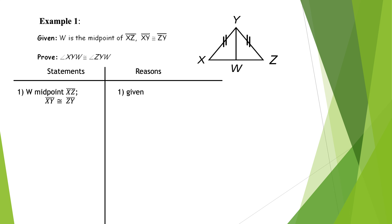On to our next proof. W is the midpoint of XZ — it sure looks like it, but I care that it says it in the given. XY is congruent to ZY, and I already put the congruent marks there. Next, prove angle XYW is congruent to angle ZYW — those are the two angles up at the top.